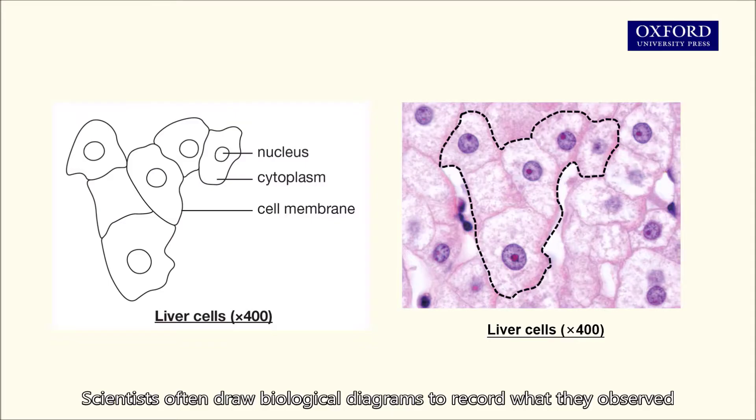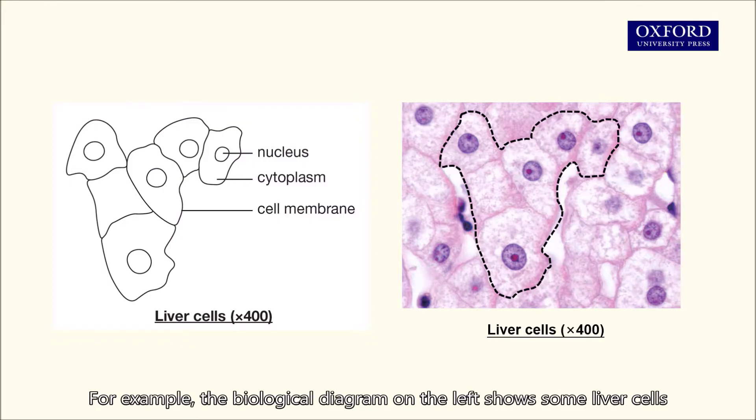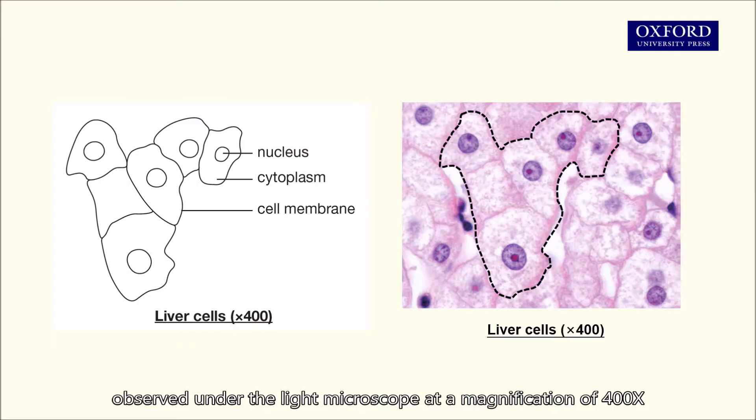Scientists often draw biological diagrams to record what they observed. For example, the biological diagram on the left shows some liver cells observed under the light microscope at a magnification of 400x.